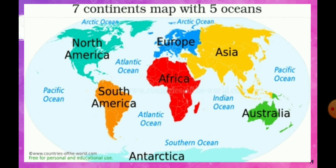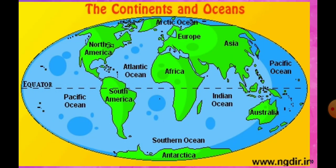The Arctic Ocean is also often written on both sides of the flat map. Now we are having another image of the continents and oceans. We can see North America, South America, Europe, Africa, Asia, Australia, and Antarctica, along with the Pacific Ocean, Atlantic Ocean, Indian Ocean, Southern Ocean, and the Antarctic Ocean.